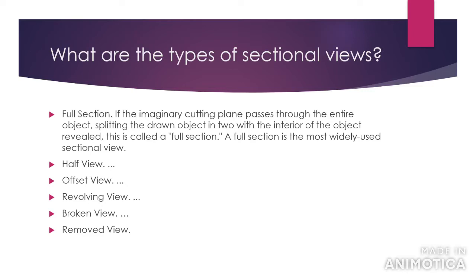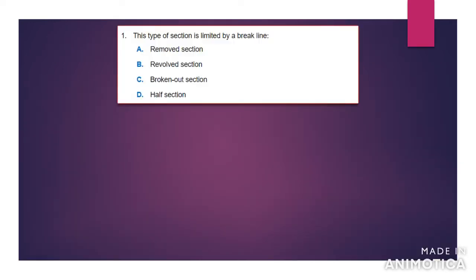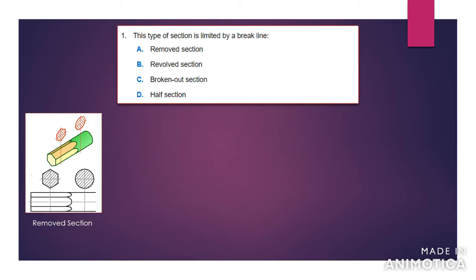With a full section, you have an imaginary cutting plane passing through an entire object and splitting down that object. The full section would be what you see in two dimensions. The first question says this type of section is limited by a break line. Is it a removed section? The removed section is when you cut the section or have your cutting plane going down the object, you remove the plane that you have just cut and take it out of the object.